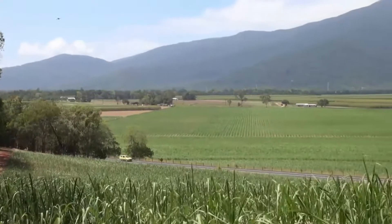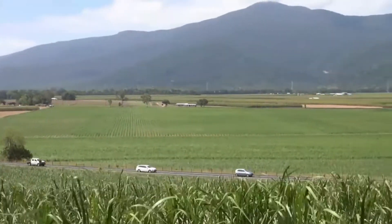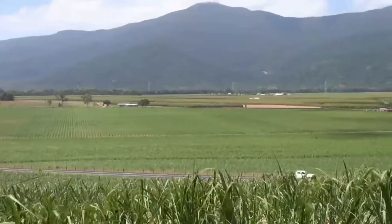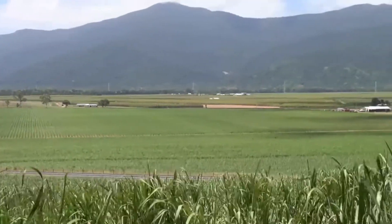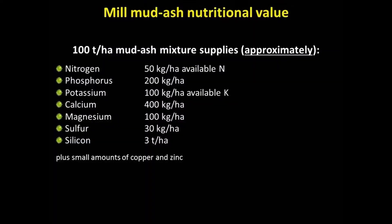Why apply mud, ash, or mud-ash mixtures to cane fields? These products are used as fertiliser or as a soil conditioner. What is the nutritional value of these mill byproducts? These figures for mill ash mixtures should be regarded as approximate, as some nutrients are in the organic form and are not all immediately available for plant growth. Advice on the nutritional value of mill byproducts should be sought from your local productivity advisor.